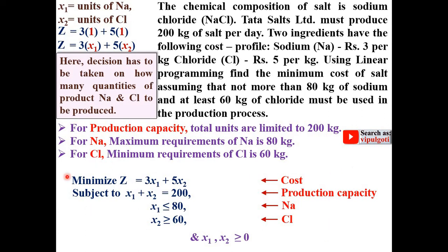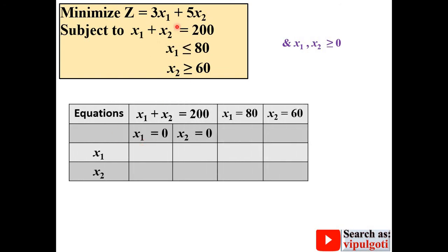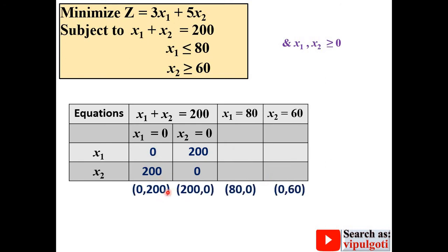Now we can apply the graphical method to find the solution. There are three constraints, written with equality signs to find coordinates. For constraint 1: if x1 = 0 then x2 = 200, and if x2 = 0 then x1 = 200. For constraint 2: x1 = 80 is directly given, so the coordinate is (80, 0). For constraint 3: x2 = 60 gives coordinate (0, 60).